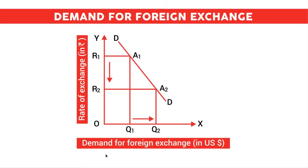Now we will see the demand curve for foreign exchange. In this diagram, the x-axis shows demand for foreign exchange in US dollars and the y-axis shows the rate of exchange in Indian rupees. The demand curve DD is downward sloping from left to right because there is an inverse relationship between demand for foreign exchange and the rate of exchange.